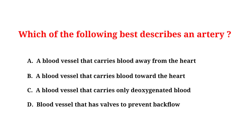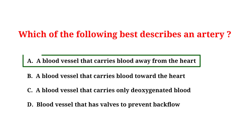Which of the following best describes an artery? A. A blood vessel that carries blood away from the heart. B. A blood vessel that carries blood toward the heart. C. A blood vessel that carries only deoxygenated blood. D. A blood vessel that has walls to prevent backflow. And the correct answer is A: a blood vessel that carries blood away from the heart.